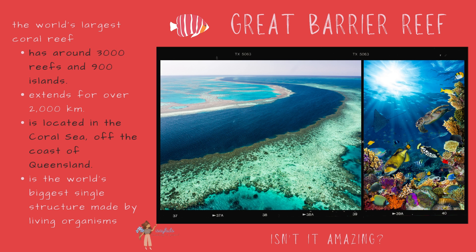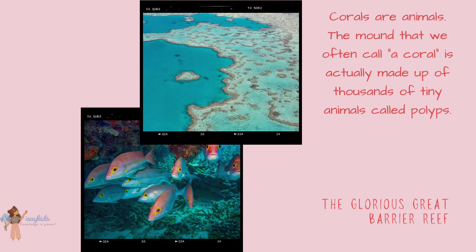Let's talk about the Great Barrier Reef — the world's largest coral reef. It has around 3,000 reefs and 900 islands, and extends for over 2,000 kilometers. It is located in the Coral Sea off the coast of Queensland, and is the world's biggest single structure made by living organisms. Corals are animals — the mound we often call a coral is actually made up of thousands of tiny animals called polyps.